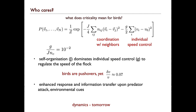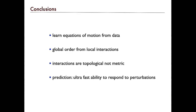So that was the static picture. Birds are dynamic and things are much more complicated — and all that is true — and that's going to come tomorrow. I just wanted to show you that we can take data and try and learn models which show that you do get global order from local interactions that are topological in nature, not metric. And there's a prediction that you're very susceptible to perturbations. Thank you.